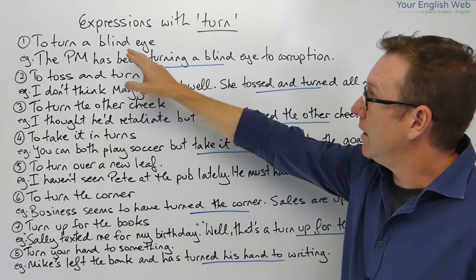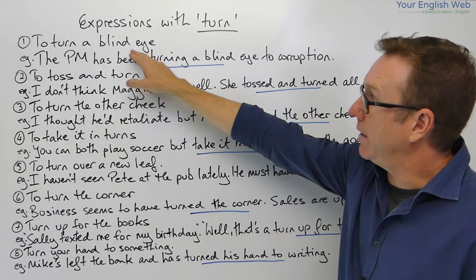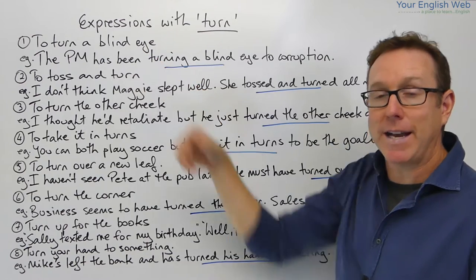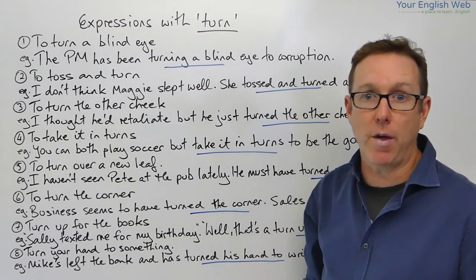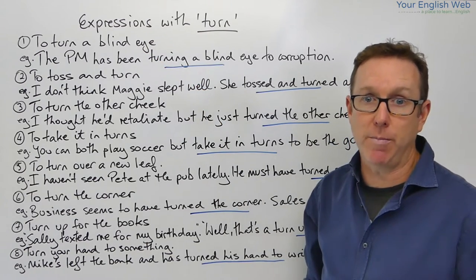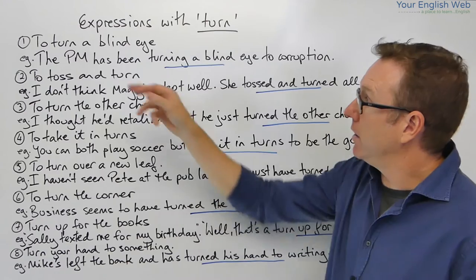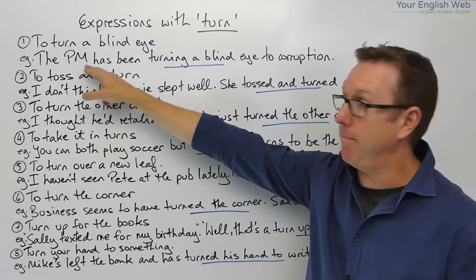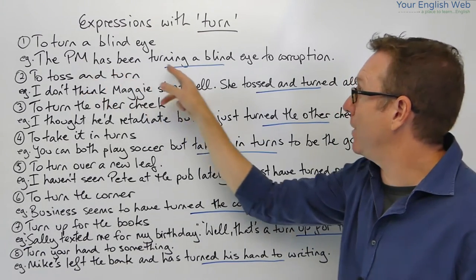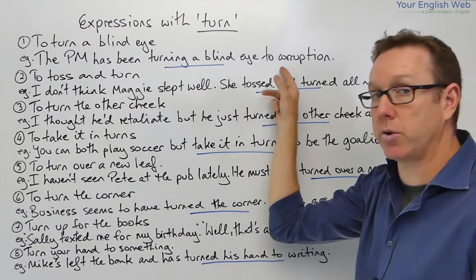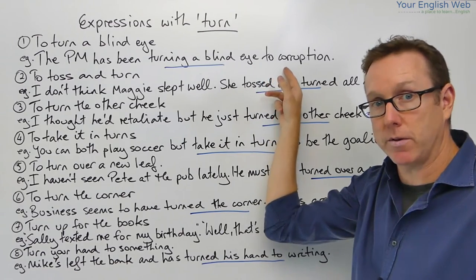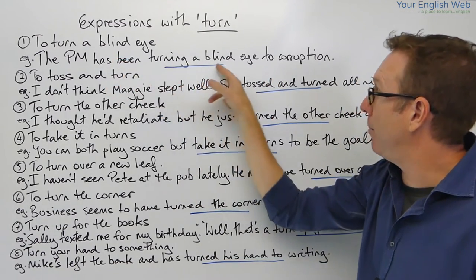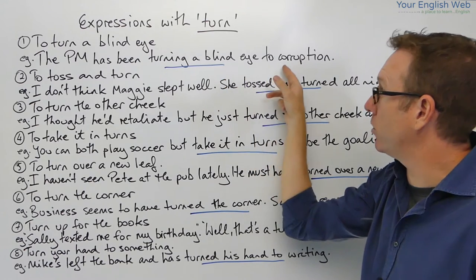The first one is to turn a blind eye. Through context, let's have a look at what this expression means. The PM — the Prime Minister — has been turning a blind eye to corruption.